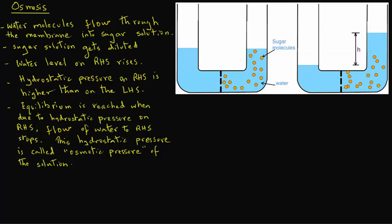In the diffusion process, we had a permeable membrane where both water and sugar molecules could easily migrate on either side of the U-shaped apparatus. Whereas in the case of osmosis, because of the semi-permeable membrane, only pure water moves to the right-hand side, which results in a hydrostatic pressure equivalent to the osmotic pressure.